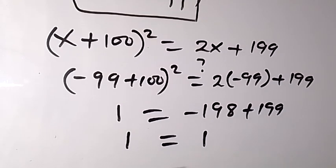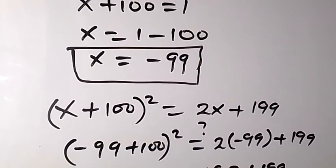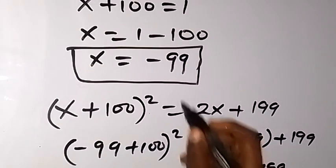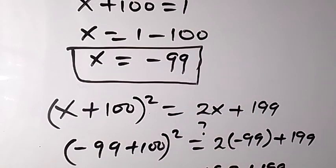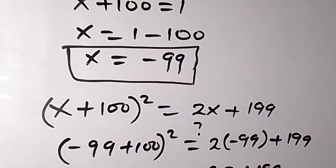The left-hand side and the right-hand side are equal, so it is confirmed that x equals minus 99. Thank you for watching. Don't forget to subscribe and like this video. See you in the next class, bye for now.